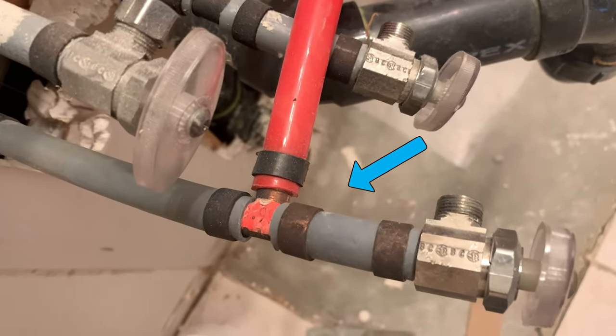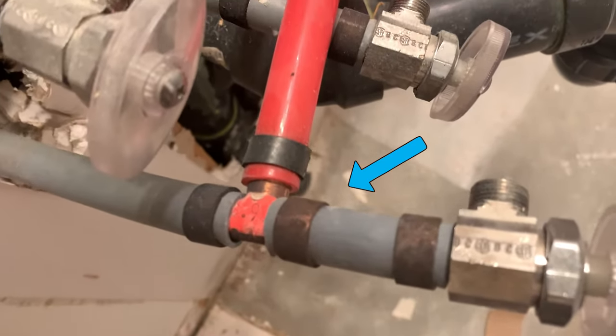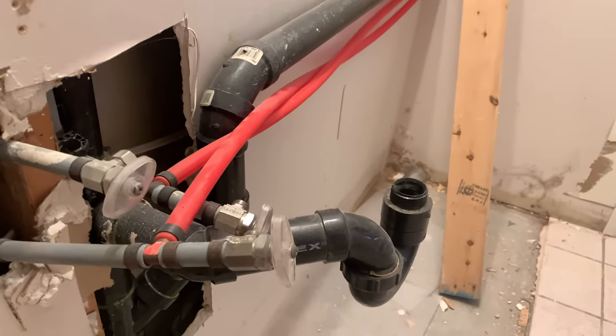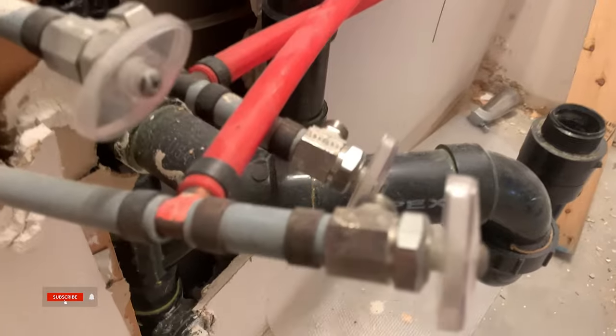I recently came across this poly B to pex transition. Someone crimped pex pipe on a poly B T which wasn't leaking at all but it could fail big time.